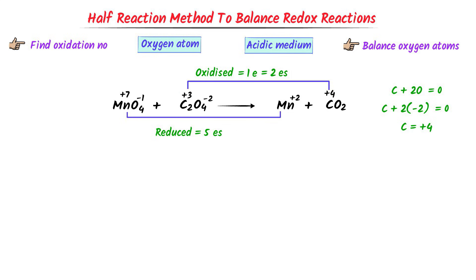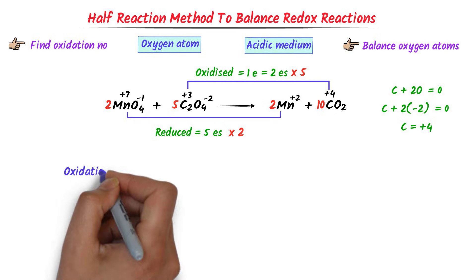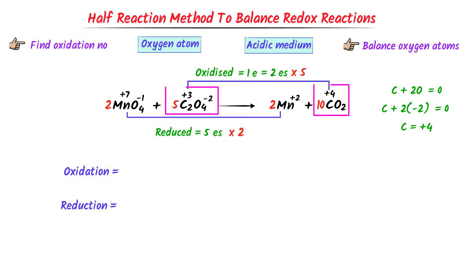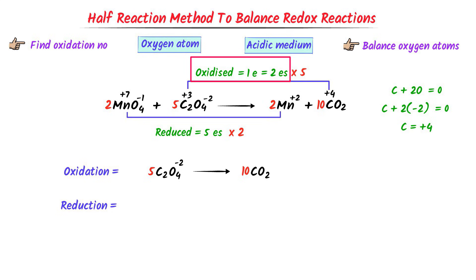Now I cross-multiply the number of electrons: I write 5 here and 2 here. I put 5 with C2O4²⁻. Now 5×2 = 10 — at the left-hand side there are 10 carbon atoms, so I put 10 with CO2. Carbon atoms are balanced. Secondly, I put 2 with MnO4⁻ and with Mn²⁺. Manganese atoms are also balanced. Now I write the oxidation reaction and reduction reaction. Carbon is oxidized: 5C2O4²⁻ → 10CO2. Since 1 ion of C2O4²⁻ loses 2 electrons, 5 ions of C2O4²⁻ lose 10 electrons — I write 10 electrons here.